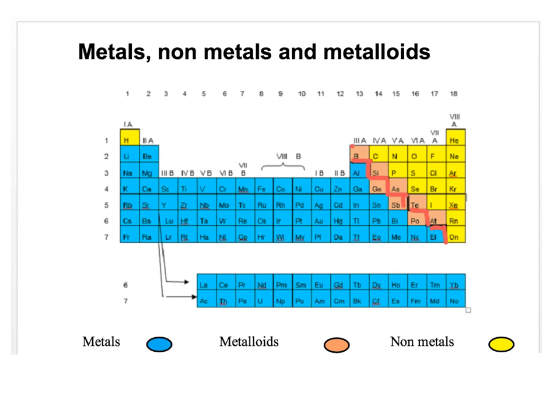Which are these metalloids? It's boron, silicon, germanium, arsenic, antimony, tellurium, polonium, and astatine. Those are the metalloids.